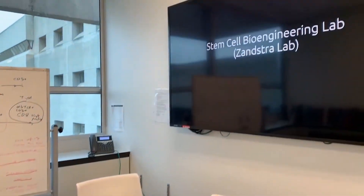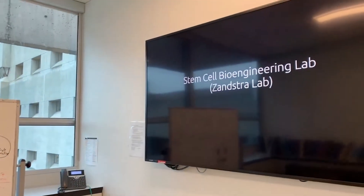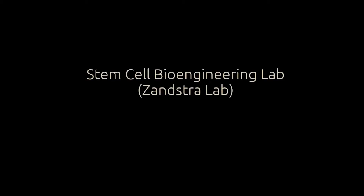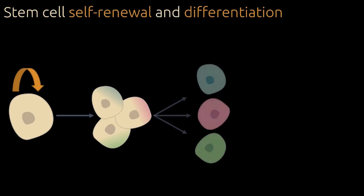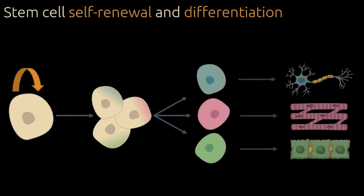In the Stem Cell Bioengineering Lab, we are fundamentally interested in how cells make decisions, with a focus on learning how to generate functional tissues to target applications of engineering, medicine, and basic life sciences. To study this, we use stem cells as a model system. Stem cells are a very special type of cell, with the capacity to self-renew and become any cell type in our body.